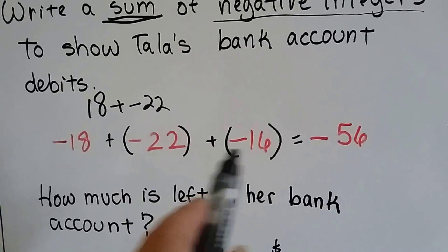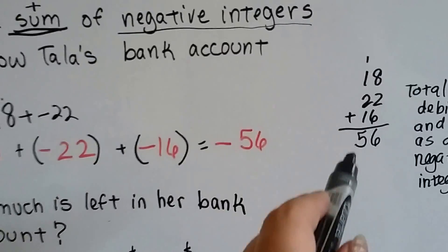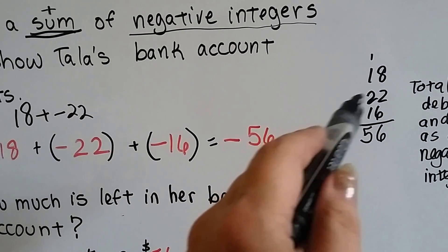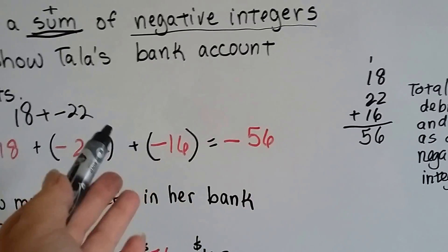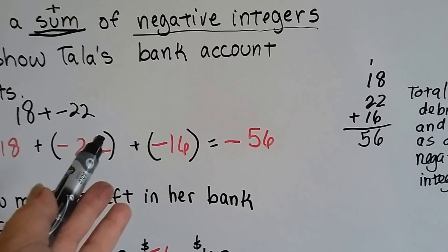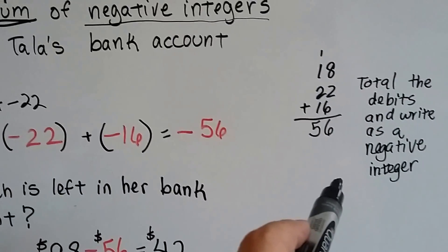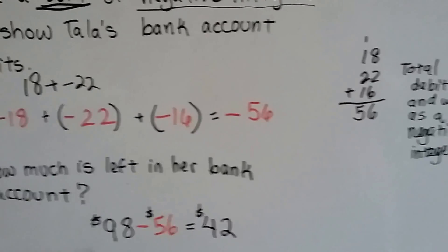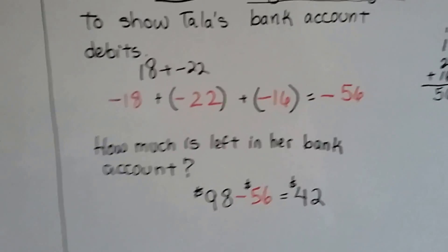So we add these together just as if we're adding regular numbers. See? 18 plus 22 plus 16 is if we're just adding regular numbers like in fourth grade or third grade. We get 56, but this is the total of debits. And we write it as a negative number. Okay? It's all the negatives added together.